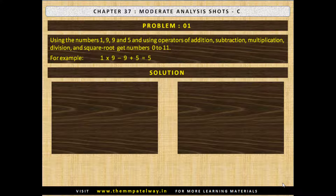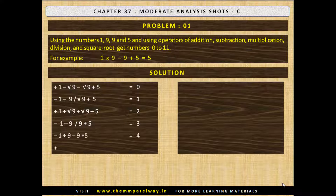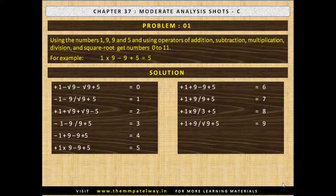The solution is: this is how you get 0, 1, 2, 3, 4, 5, 6, 7, 8, 9, 10 and 11. There could be other ways to get the answers.